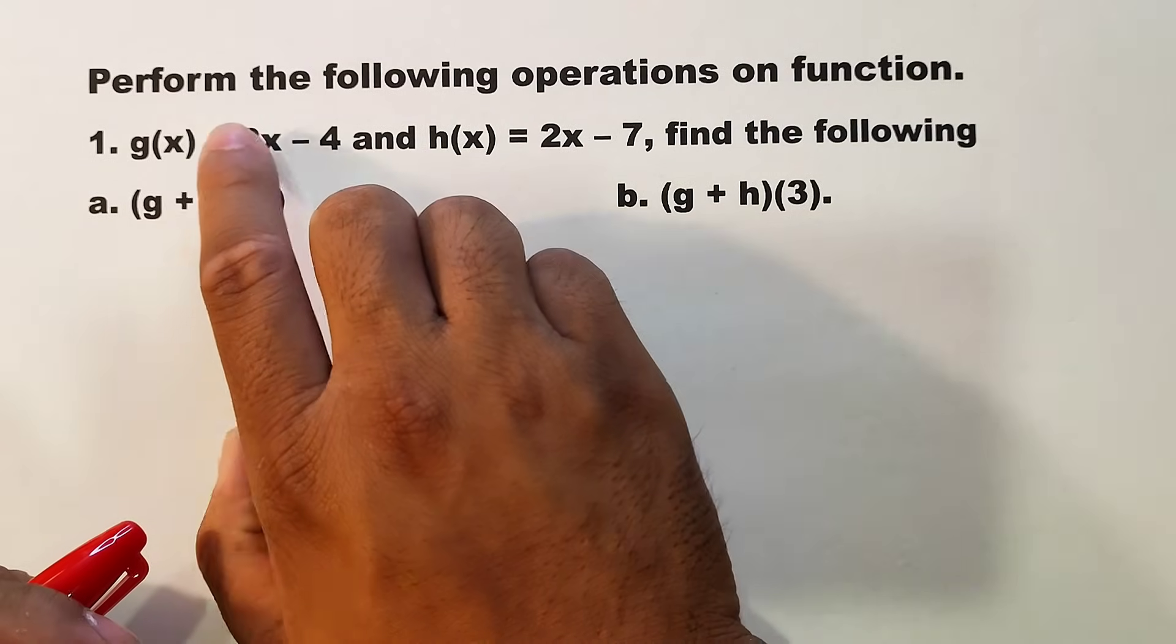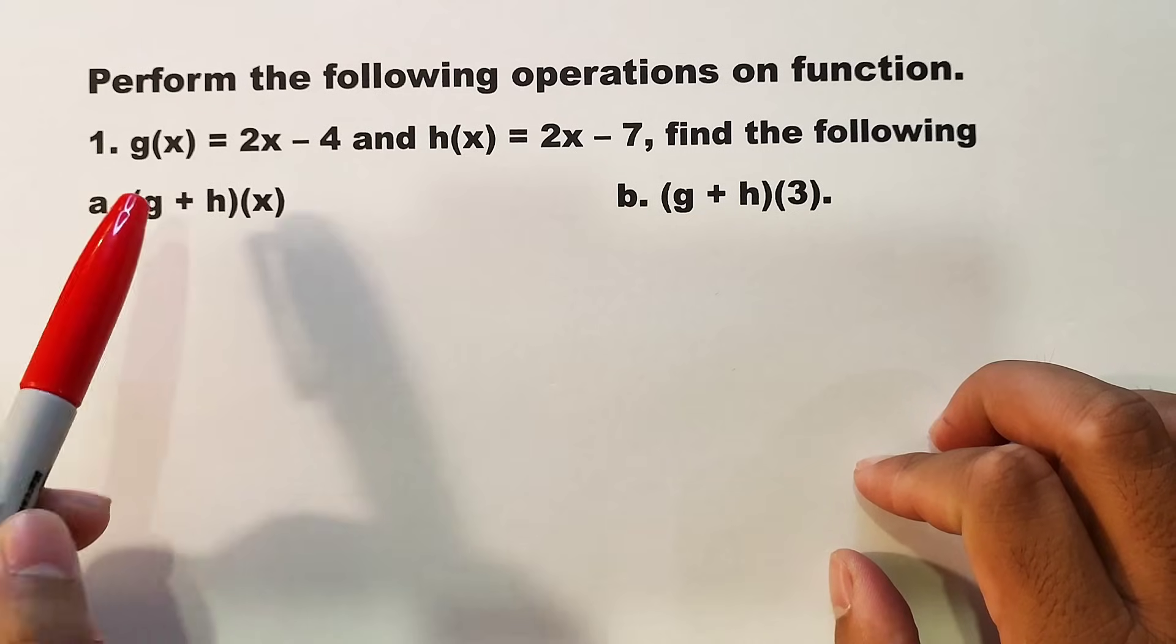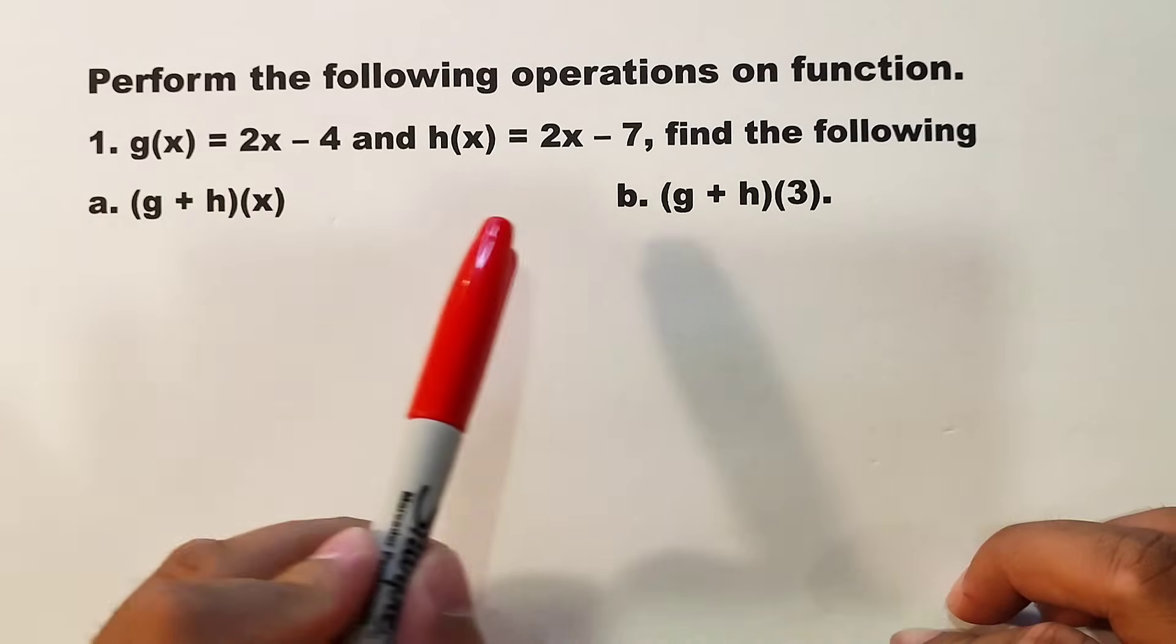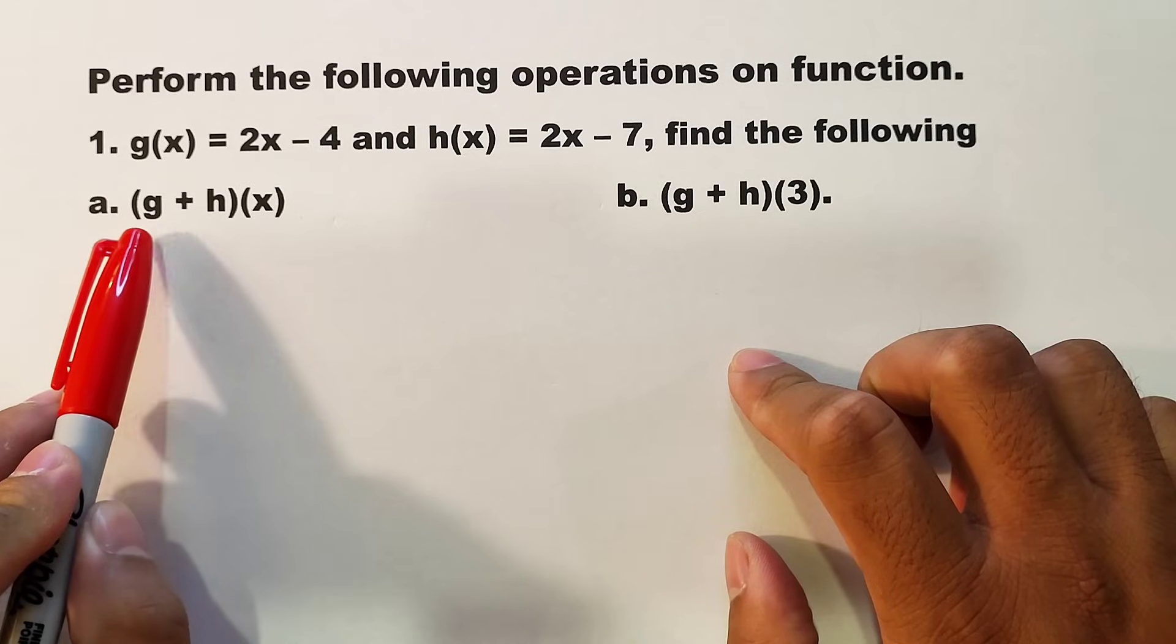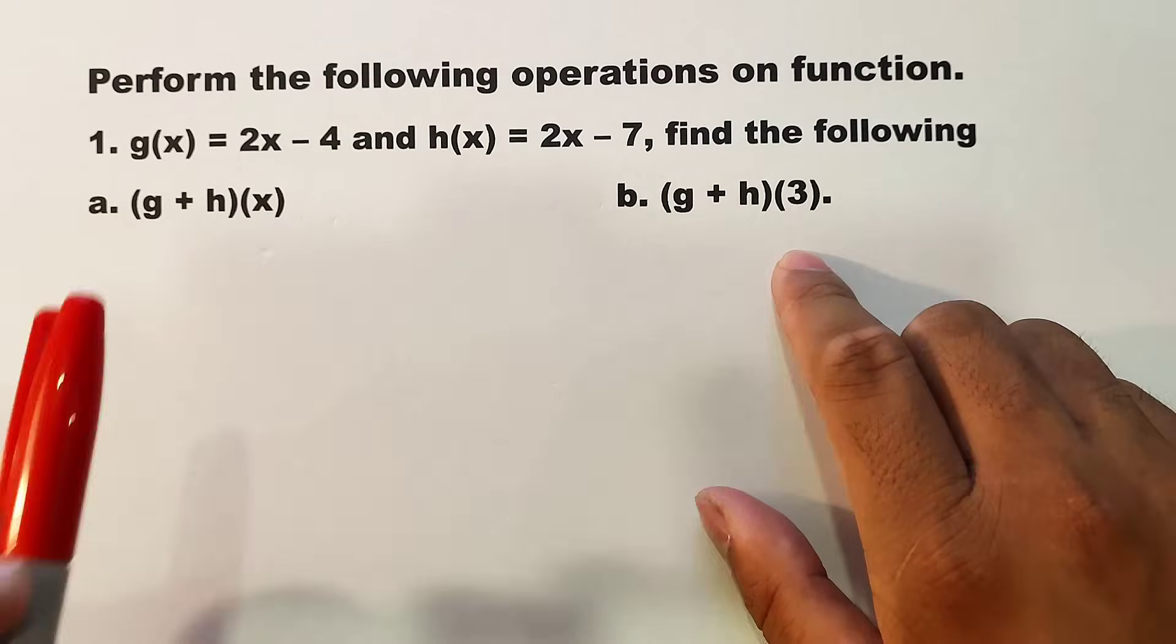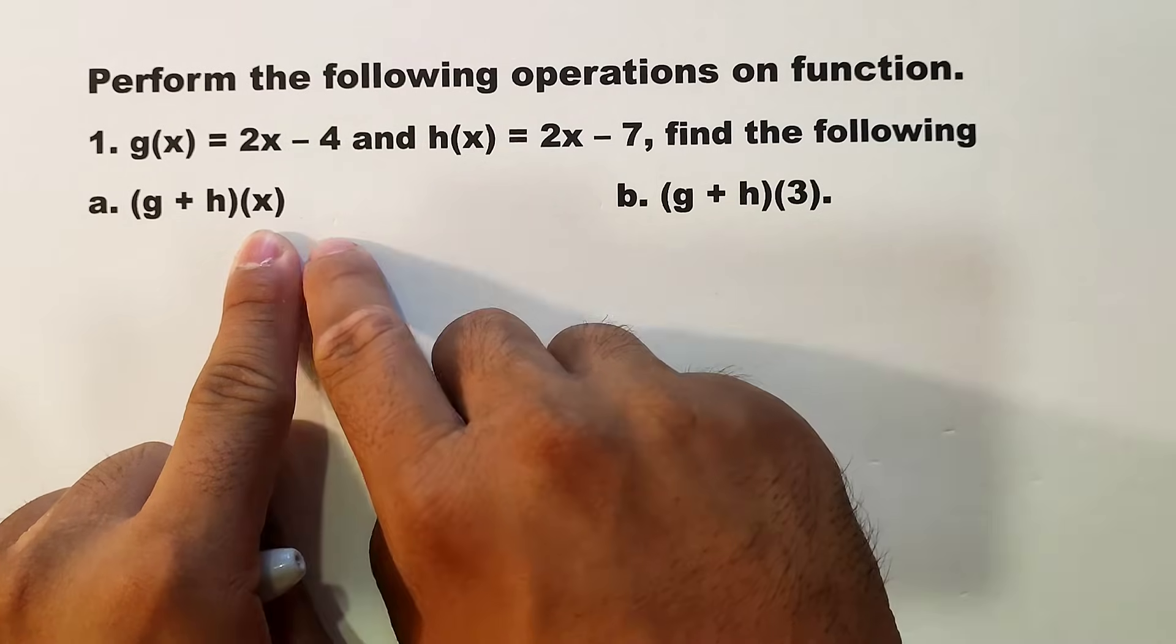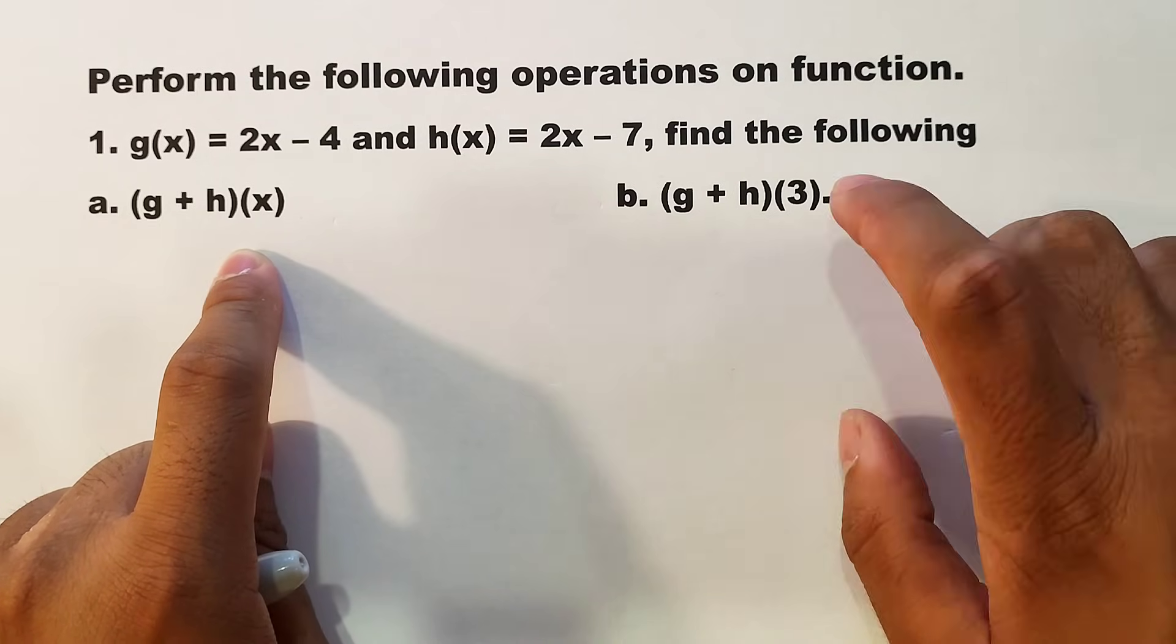In example number 1, we are asked to perform the following operations on functions. We are given two different functions: g(x) = 2x - 4 and h(x) = 2x - 7. We need to perform two operations: (g + h)(x) and (g + h)(3). As you can see, the operation is the same but we have different inputs. In letter A, the input is the variable x. In letter B, the input is 3.